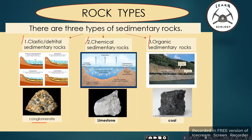The second type is chemical sedimentary rock. For example, when a lake or lagoon is present and the sea level drops, the water evaporates and the remaining minerals form limestone and dolomite.